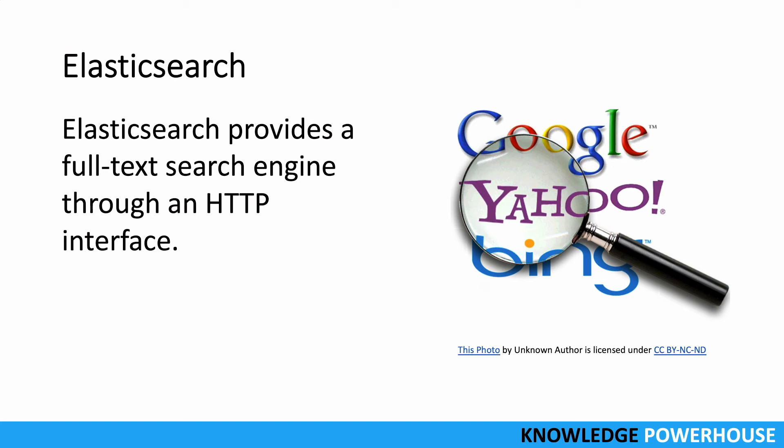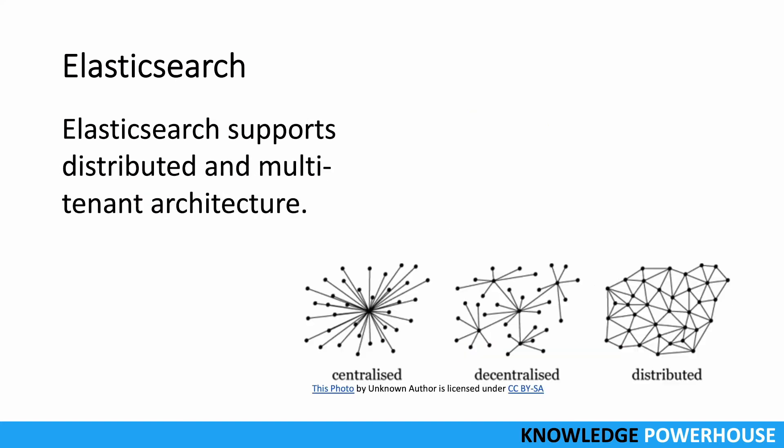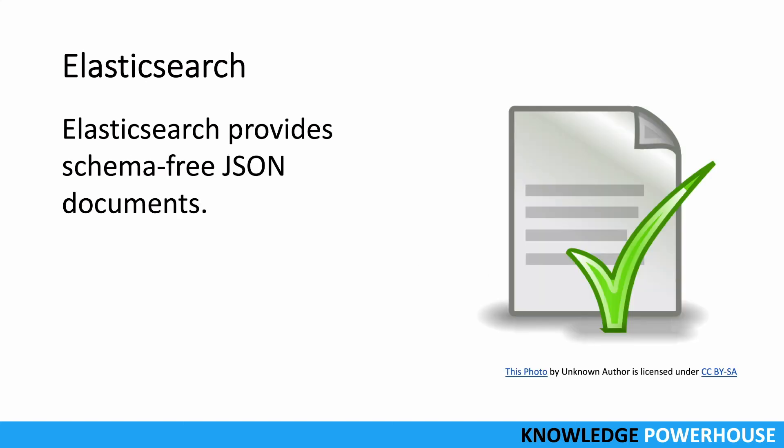Elasticsearch supports distributed architecture — it can work in a distributed system and supports multi-tenant architecture as well. All these different architectural styles are supported by Elasticsearch. Especially in the enterprise, when we have thousands of nodes serving data and handling traffic, Elasticsearch is very useful because of these capabilities.